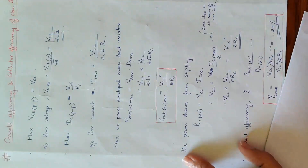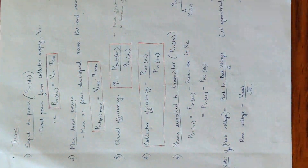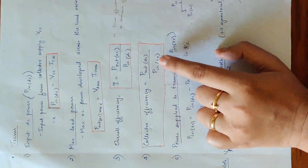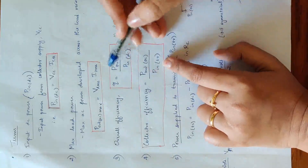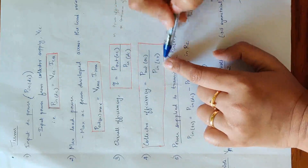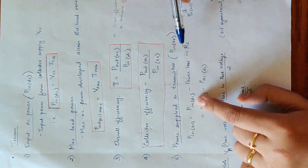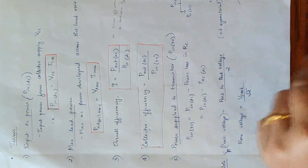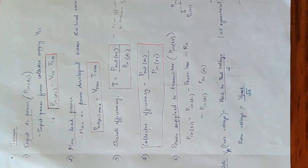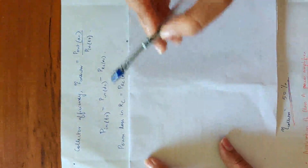Now, what is collector efficiency? The equation for collector efficiency is P_out_AC divided by P_in_transistor. P_in_transistor equals P_in_DC minus the collector resistance loss — that is, P_in_DC minus the power loss in RC (DC power loss in RC).